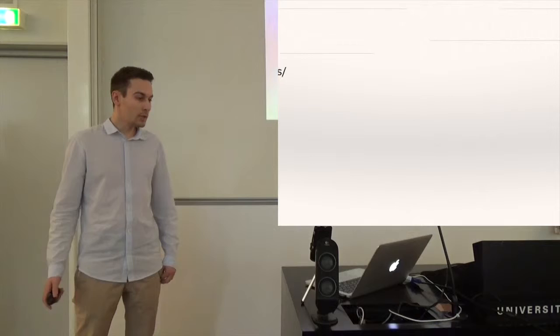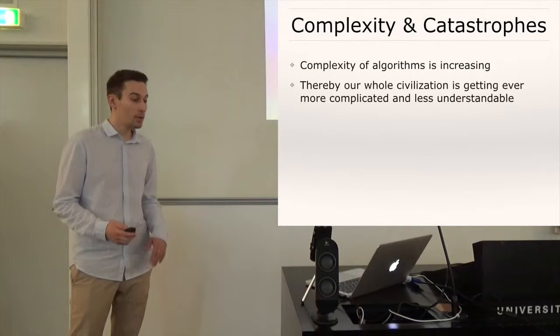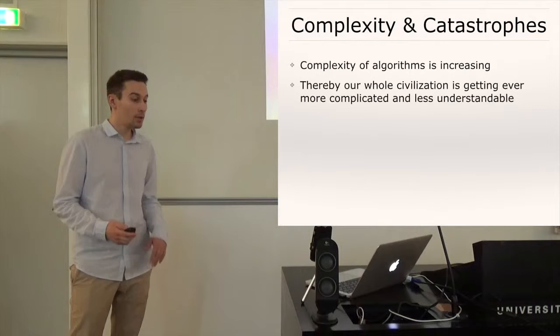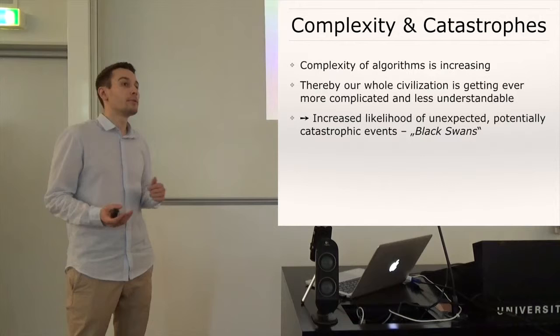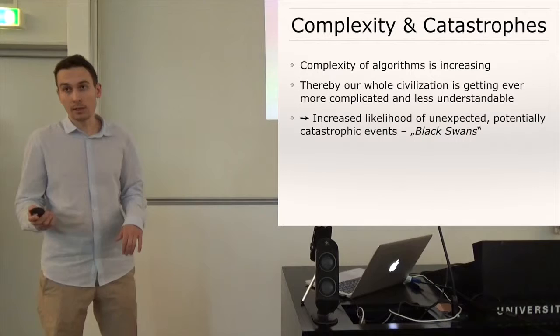So one issue is that the algorithms are getting more and more sophisticated and thereby our whole civilization is getting more and more complicated and less understandable. And generally, the more complicated a system is, the greater is the likelihood that some unexpected, maybe even unforeseeable event will occur that has catastrophic consequences, like events that the author Nassim Taleb calls black swans.